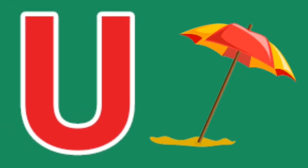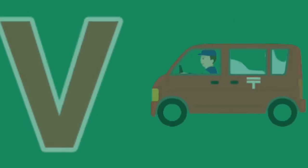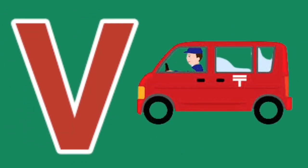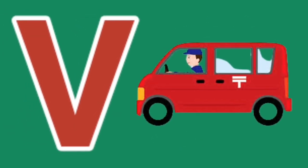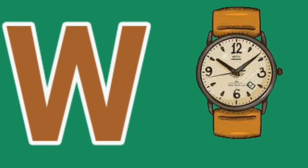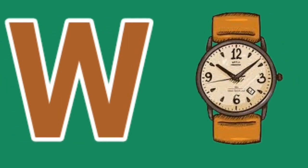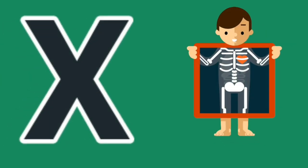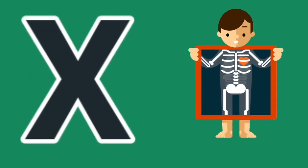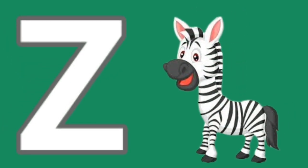U for umbrella, V for van, W for watch, X for xylophone, Y for yo-yo, Z for zebra.